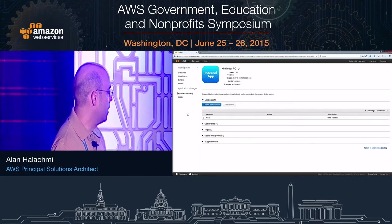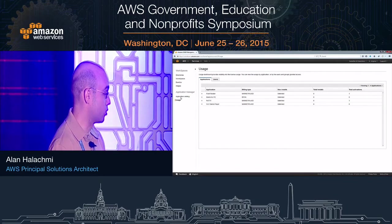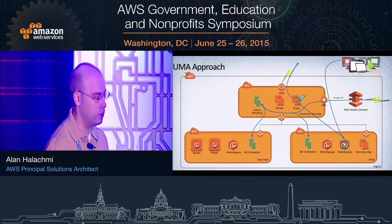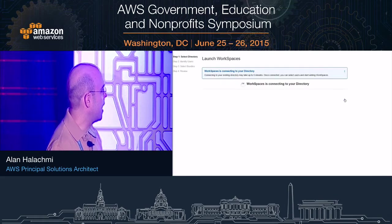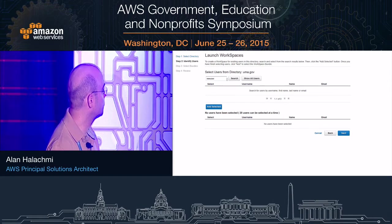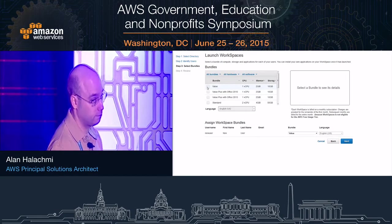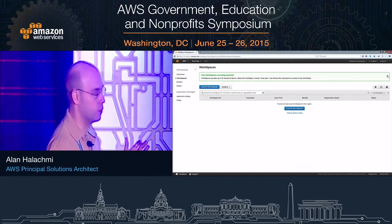As the final administrator step, I need to launch a WorkSpace. I'll place it in the new Mission VPC. I had previously created a new user in AD who'll receive this workspace. I search for the new user, pick them, select the WorkSpaces bundle, and deploy. It really is that simple to get a new WorkSpace deployed. The WorkSpace is ready — and we're done with the administrator experience.